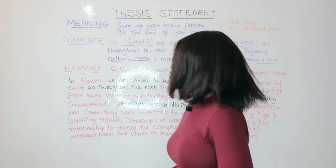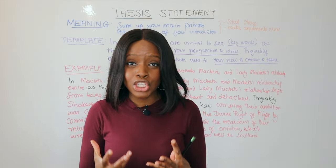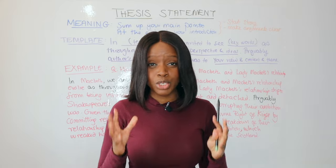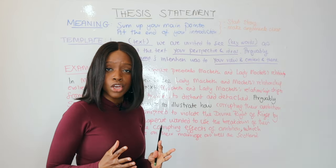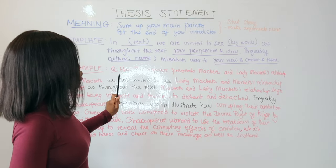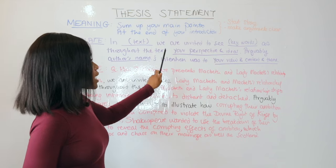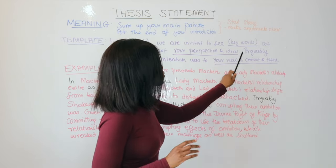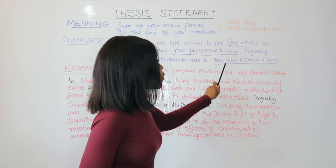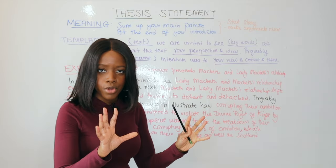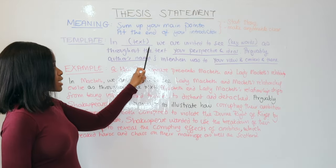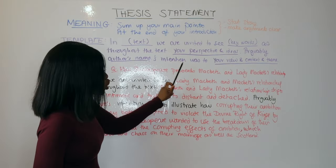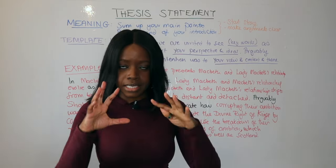Here is the perfect template you can use when writing any thesis statement. I'm going to show you how to apply it when writing about Macbeth by William Shakespeare, but this template can be used for any text. The template is: 'In [name of text], we are invited to see [keywords from the question] as throughout the text [your perspective and ideas]. Arguably, [author's name]'s intention was to [your view, context, and/or theme].'